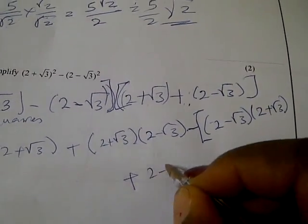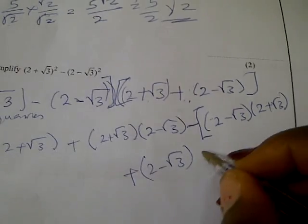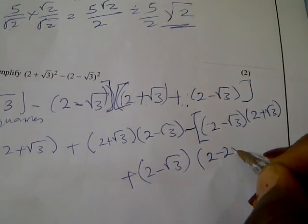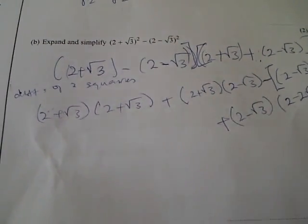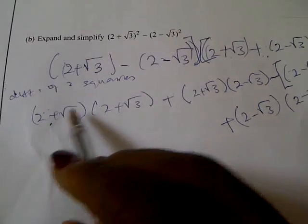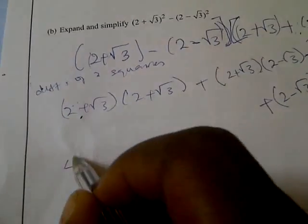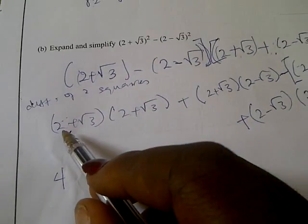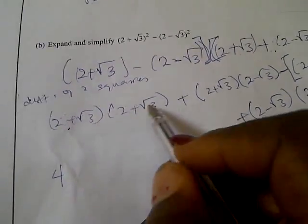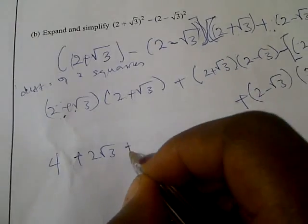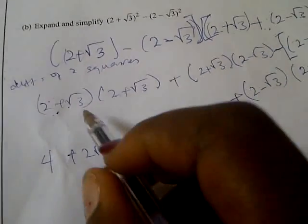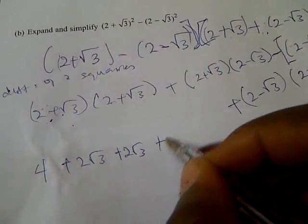Plus (2 − √3) into (2 − √3). Now multiplying out, taking it slow and steady: 2 times 2 is 4. Then 2 times √3 is plus 2√3. This times this is plus 2√3. And this times this is plus 3.